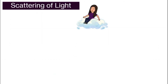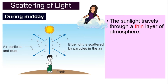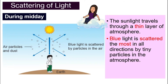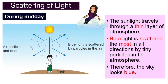So let's see what happened during midday first. During midday, the sunlight travels through a very thin layer of atmosphere, because the position of the sun is directly above us. So it will only travel this distance, which is thinner compared to when it is during sunset. The blue light is the light that is scattered the most in all directions by the air particles in our atmosphere — for example, the dust, the water droplets and so on. That is why the sky looks blue during midday.